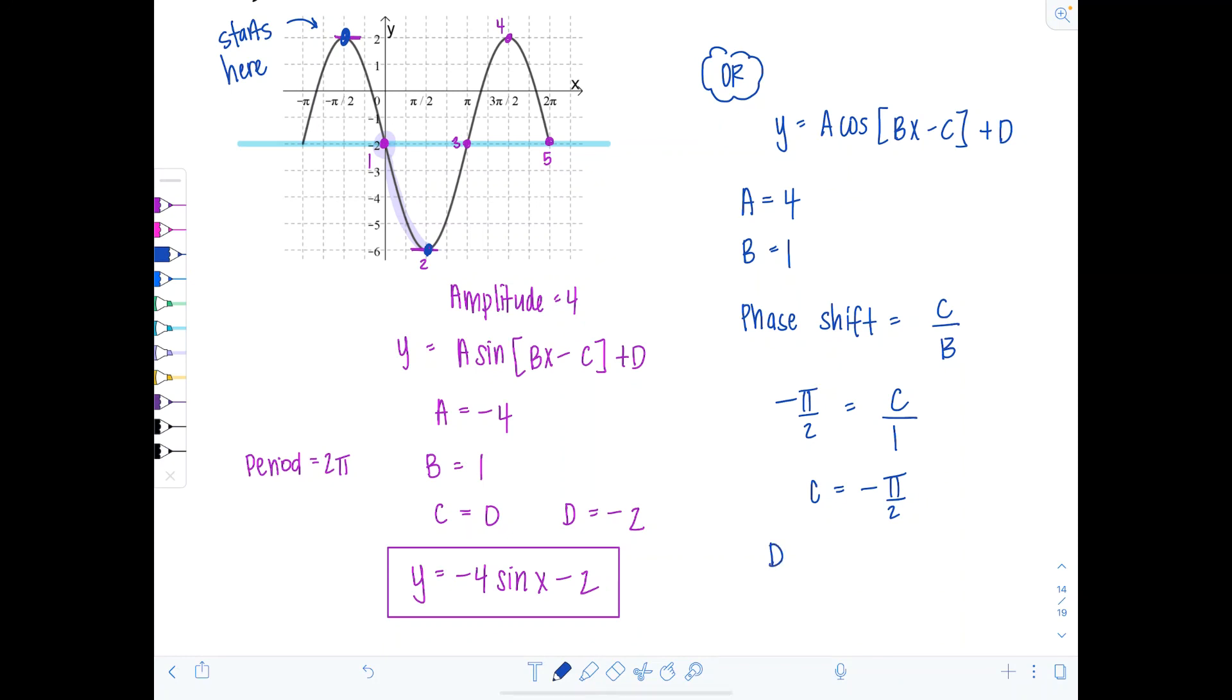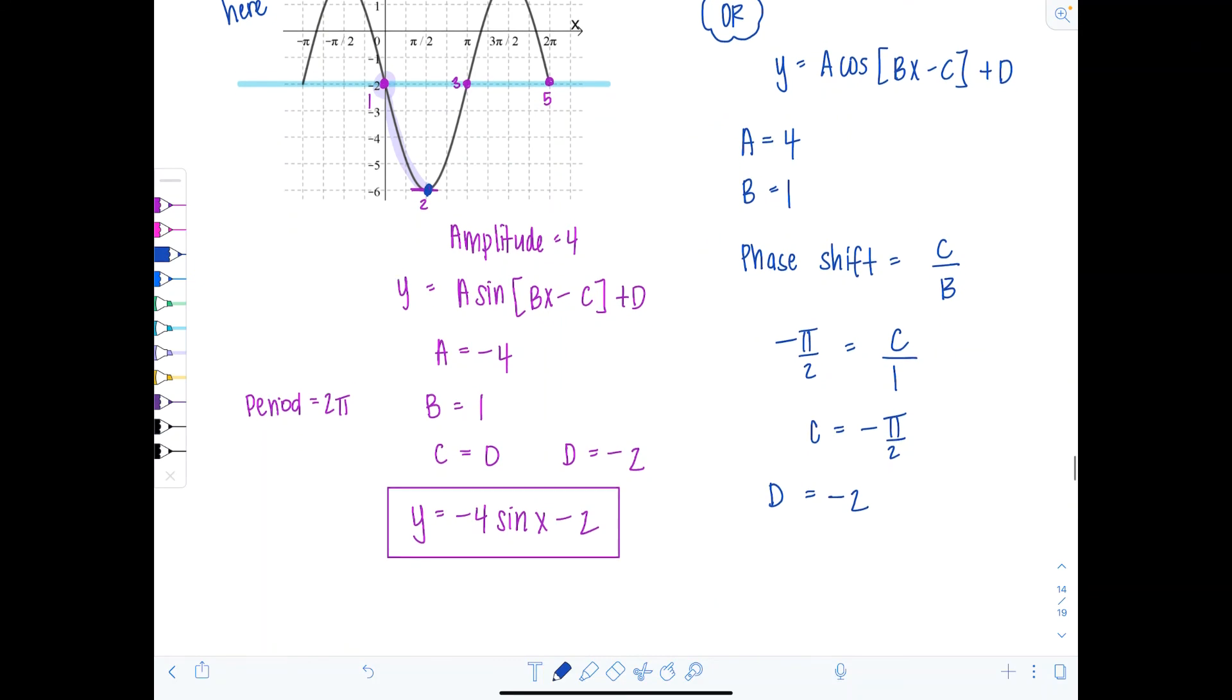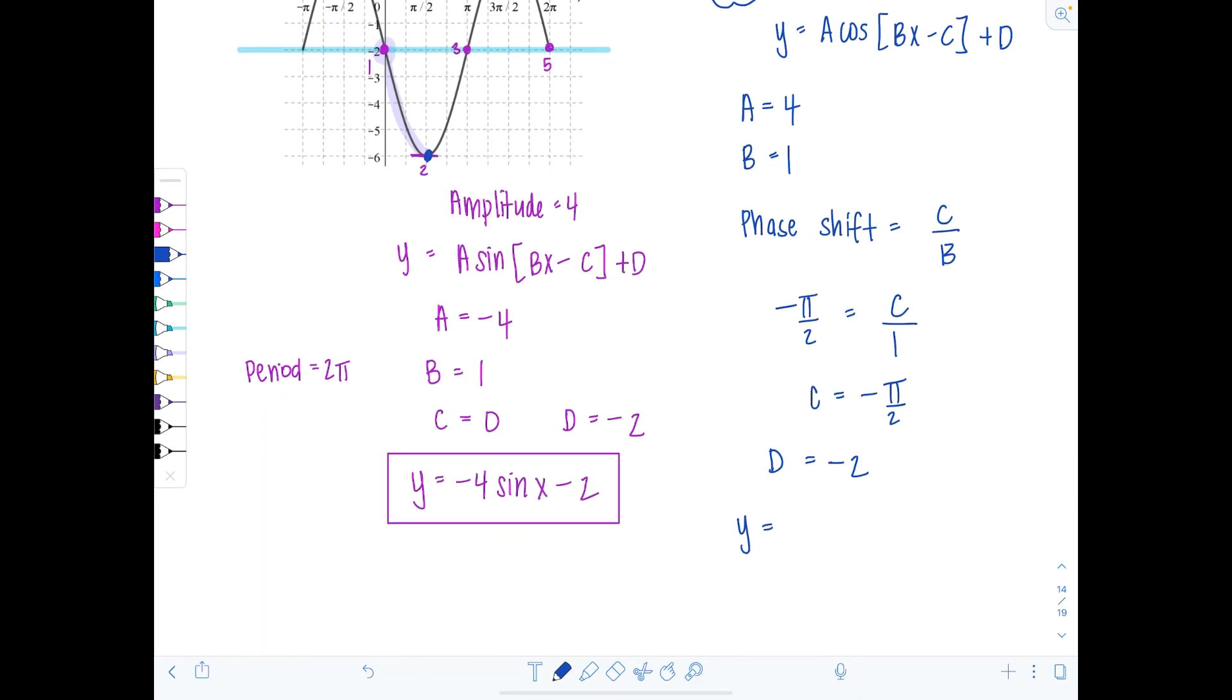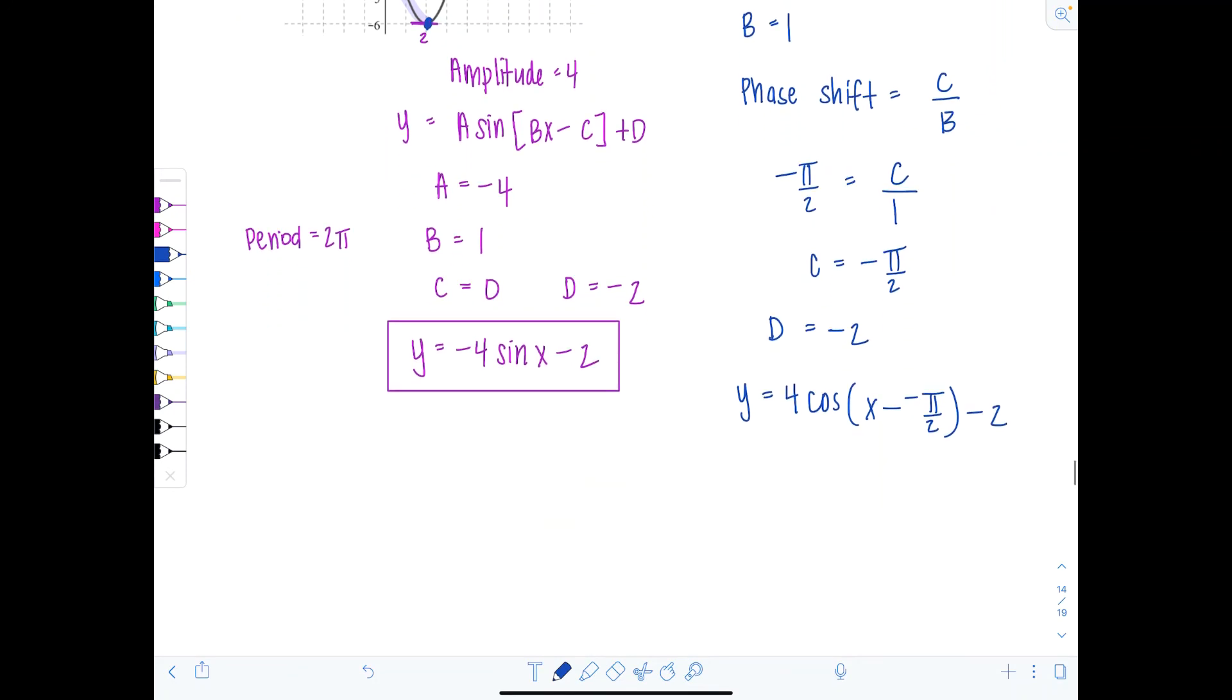D, our vertical shift is negative 2. That's the same. And now I'm ready to put everything together. So I have y equals 4 cosine. Now put some parentheses here. It's going to be x minus c negative pi over 2 plus d. So minus 2. And then clean that up. Y equals 4 cosine x plus pi over 2 minus 2. So that's how you deal with the phase shift.